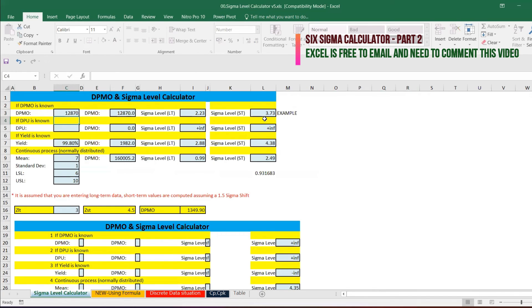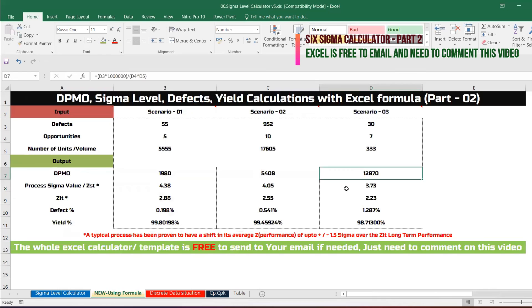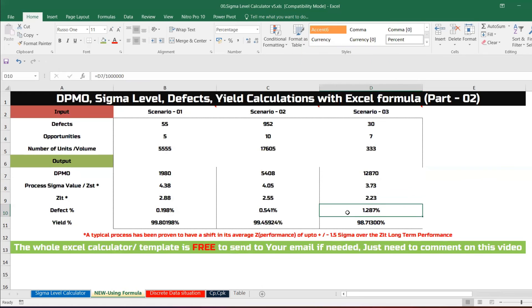3.73 is the short term, also called process sigma, and Z LT the long term will be 2.23. The defect is 1.28% and the yield is 1 minus that value.